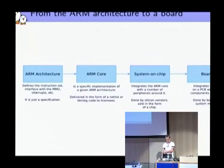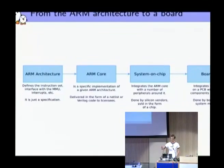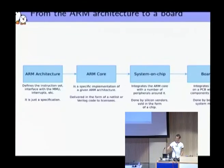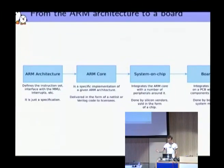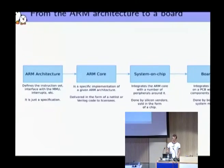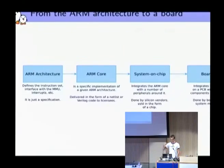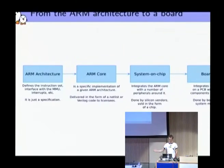Depending on the ARM core you choose and the peripherals you add, you target the chip to a specific market. Then there is a board maker or system maker that buys this system on chip — it is a physical chip — and puts it on a PCB, integrates other components around it to interface with the outside world and adds additional components as needed. It's really important to understand this chain of elements in every ARM system you buy.